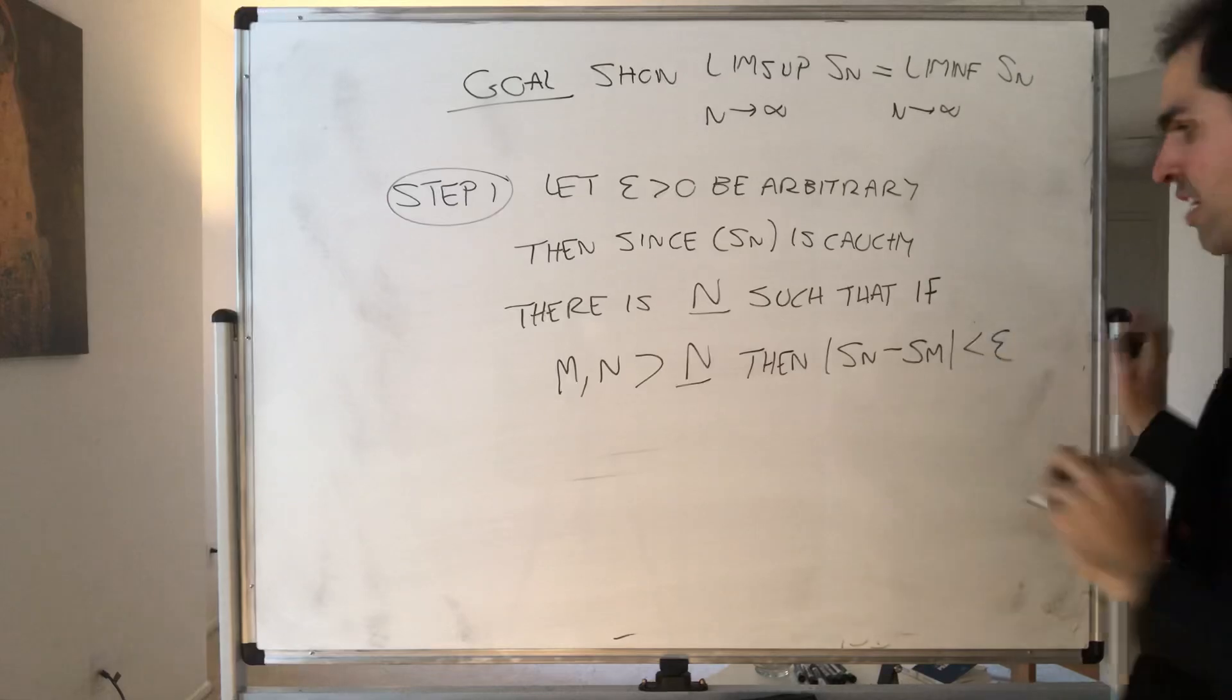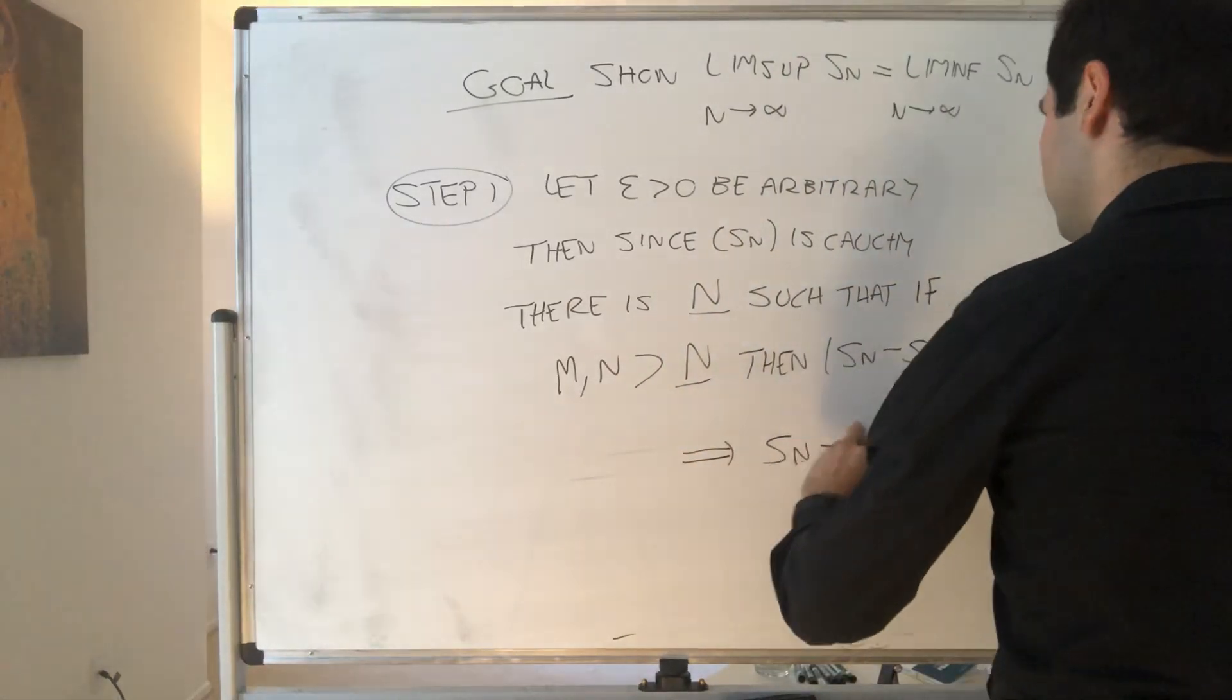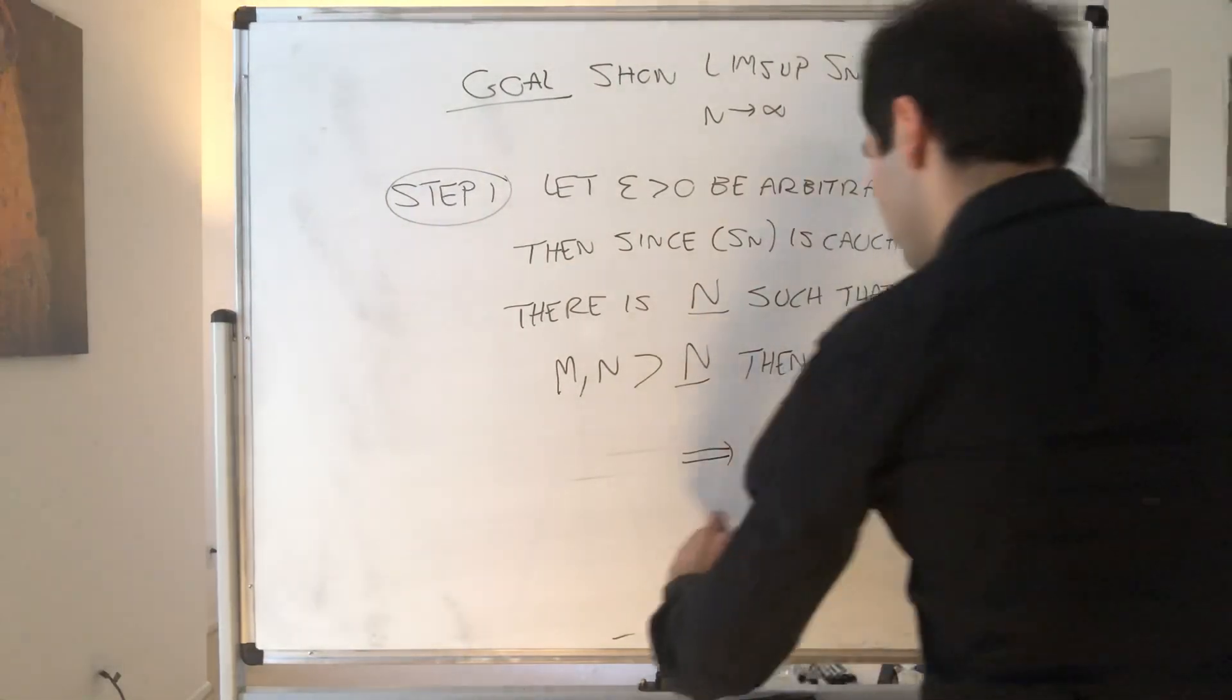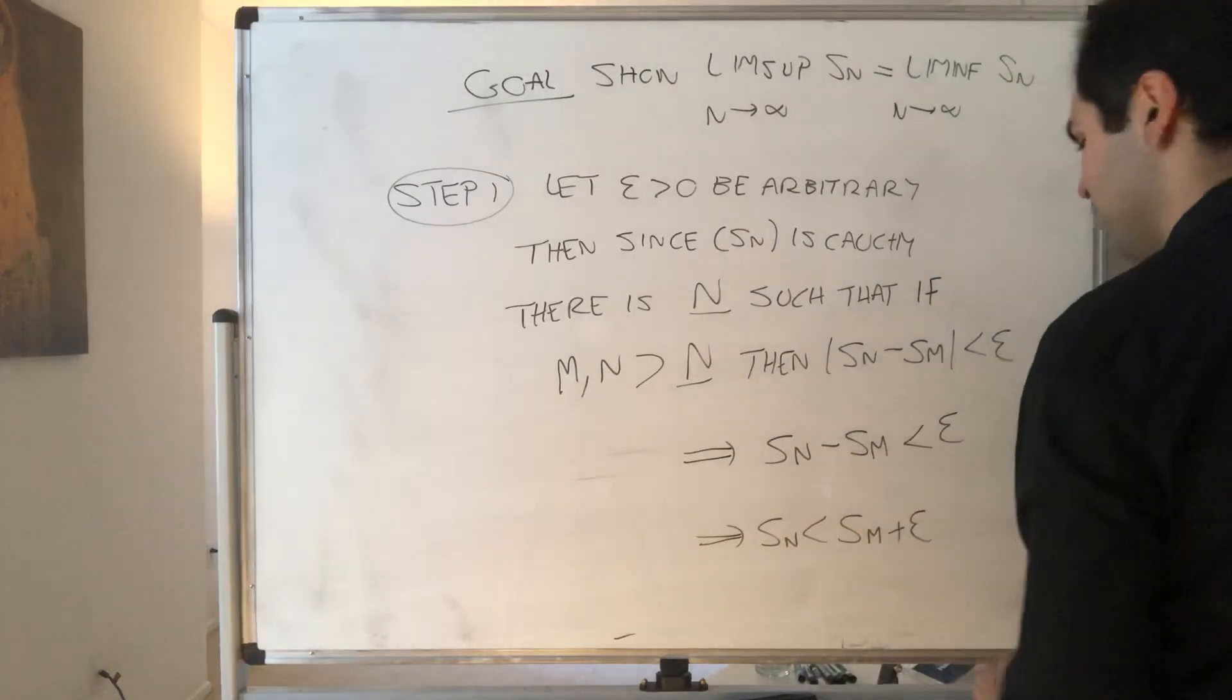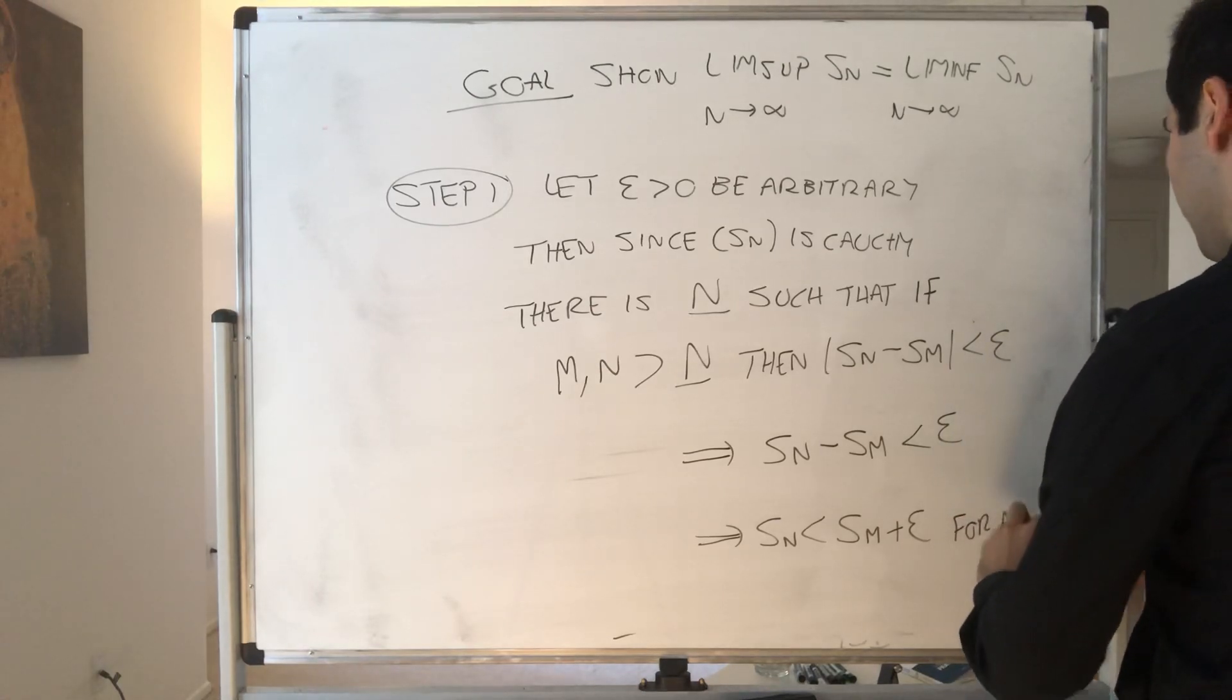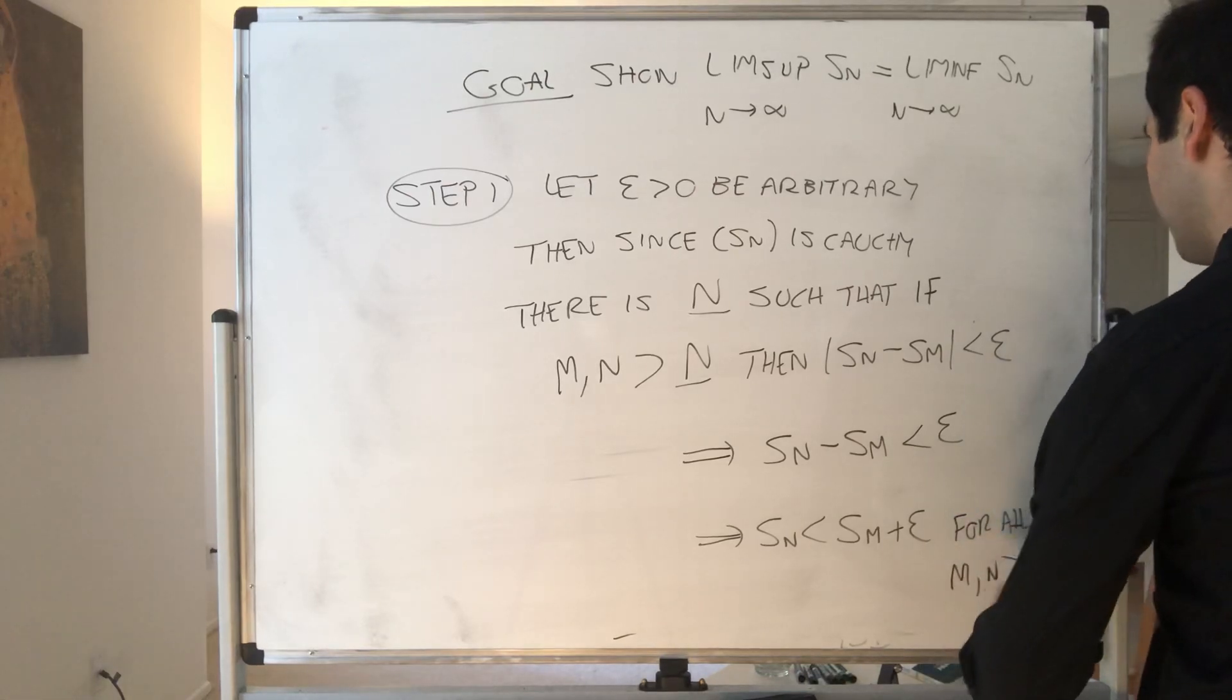But notice, in particular, this implies that Sn - Sm < ε. So Sn < Sm + ε. And that's for all M and N bigger than capital N.